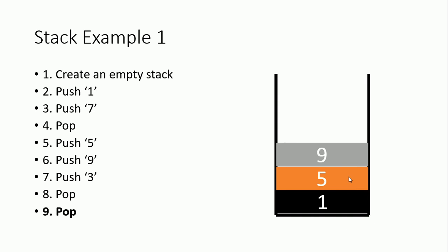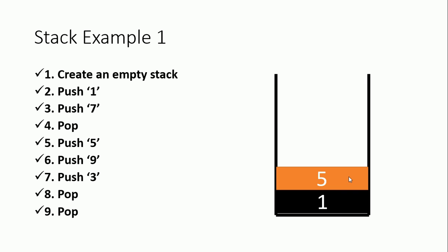The last step for this example is also a pop operation. After removing three, the topmost value is nine, so we remove nine. We've now executed all the steps, and the values remaining inside the stack are one and five.